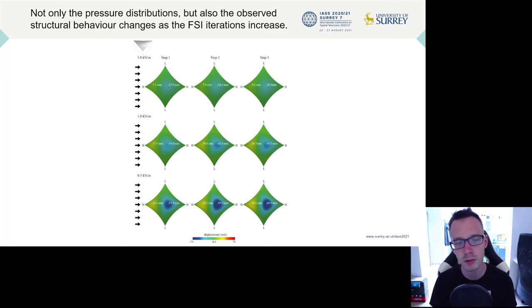But for the 0.5 kN per meter case, this increase rises up to almost a full centimeter between step one and step three. So certainly for high flexibility cases, this FSI process can be very useful.